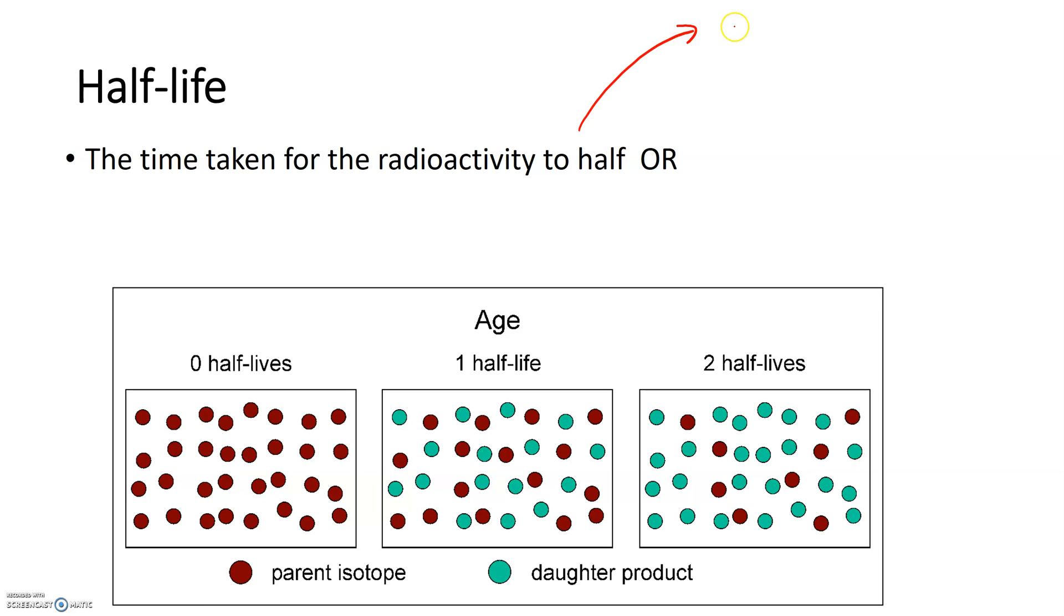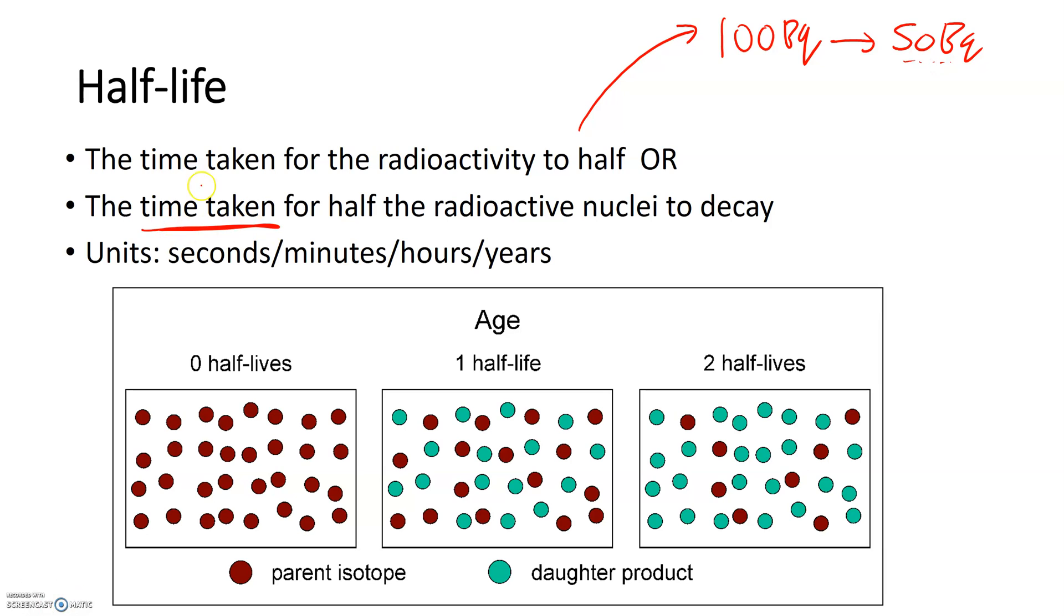So let's say we start with 100 becquerels. Now becquerels is a measure of radioactivity, it's the number of counts per second. Okay so 100 becquerels mean that there are 100 beeps or 100 counts or 100 alpha beta gamma particles per second. So in this definition, it's the time taken for that to fall to half its value. The other option is the time taken for half the radioactive nuclei to decay. Well see how that's related. If we have half the radioactive nuclei, we're going to have half the radioactive count. So given it's a time, and don't forget in the exam it's really important you mention the time taken because it is a time, so the units are time units, any of those depending on which is the most sensible.